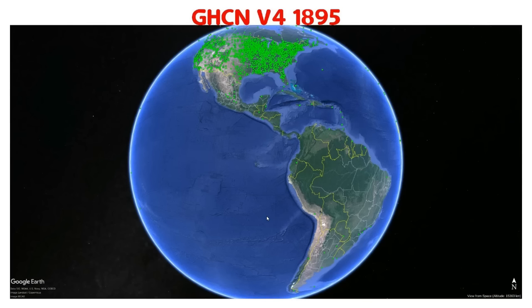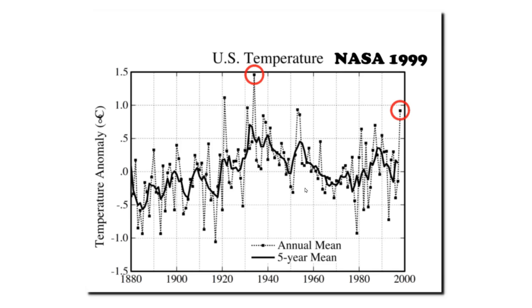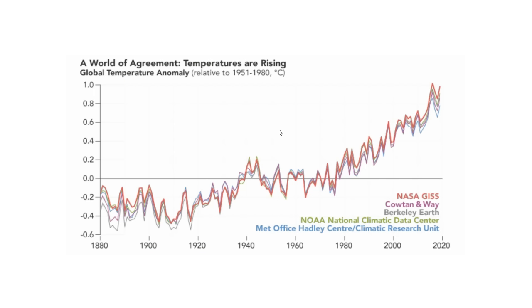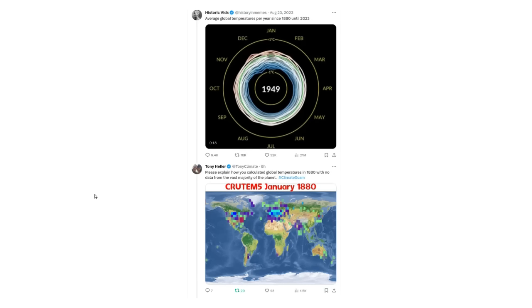With a very low-quality global temperature record, they're simply making up a bunch of fake data. And with a very high-quality U.S. temperature record, they're tampering with the data to turn cooling into warming. Both the adjusted U.S. temperature graph and the published global temperature graphs are massively fraudulent. But people want to believe in authority.